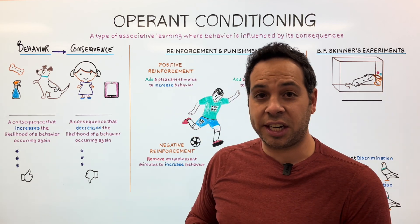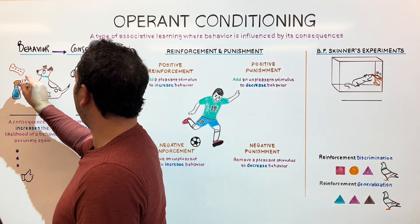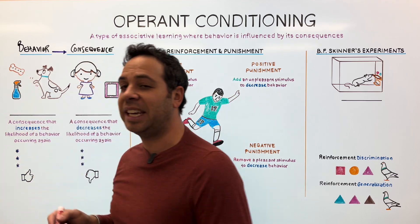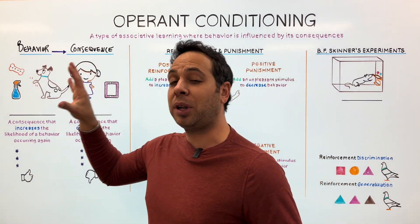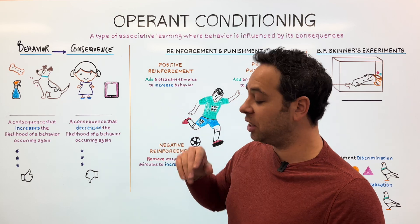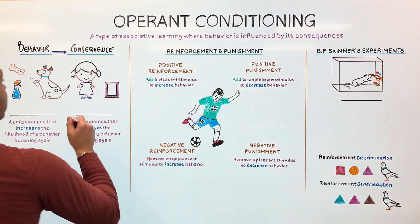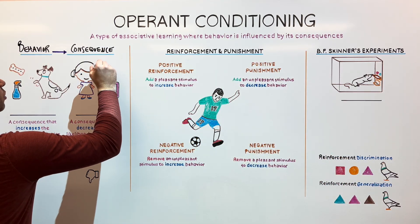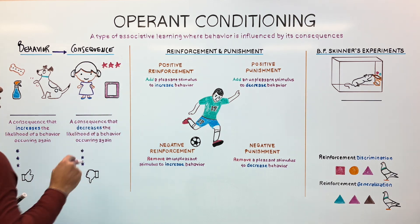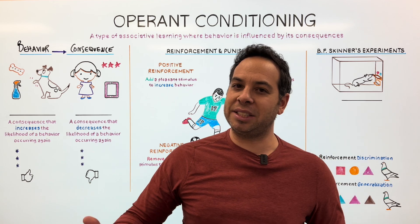Take, for example, this dog that's sitting and maybe shaking its paw. Why? Because the consequence is getting a treat. And we can apply that principle to humans as well. Why is this little girl doing chores? Well, maybe she's getting some stars — she could use those stars to buy a toy later. So behavior is going to strengthen because of the positive consequence.